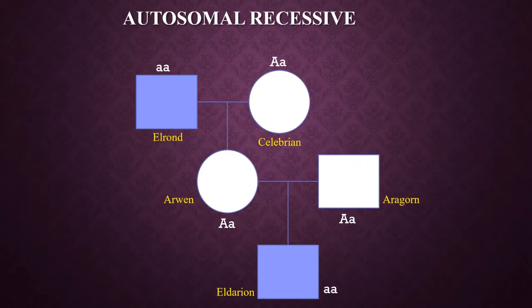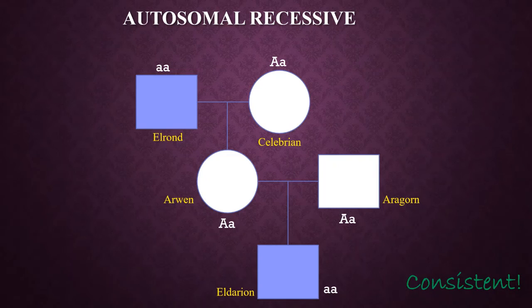In the autosomal recessive mode of inheritance, all genotypes correlate with each individual's traits, and therefore we can say that this is a consistent mode of inheritance.